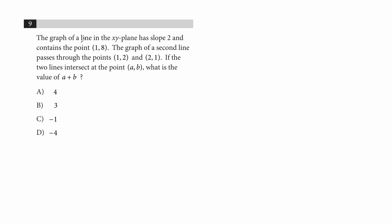Question 9. The graph of a line in the xy plane has a slope of 2 and contains the point (1,8). The graph of a second line passes through two given points. These two lines intersect at one point, given as (a, b). So we have to find the coordinates of that intersection point, and then find the total — a plus b.